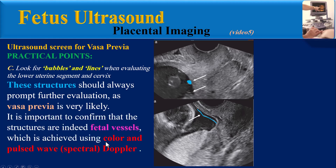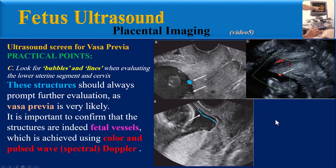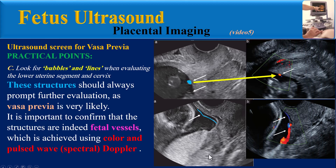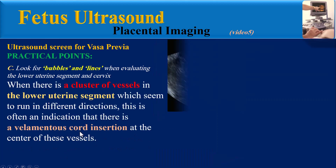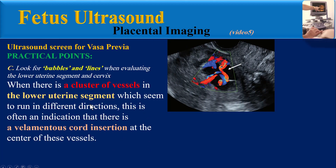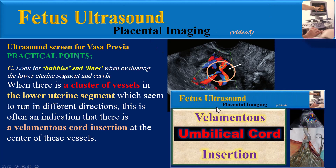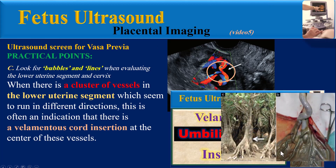It is important to confirm that the structures are indeed fetal vessels, which is achieved using color and spectral Doppler. When there is a cluster of vessels in the lower uterine segment which seem to run in different directions, this is often an indication that there is a velamentous cord insertion at the center of these vessels. This feature is known as the Munro 3 sign, as explained in video 4.